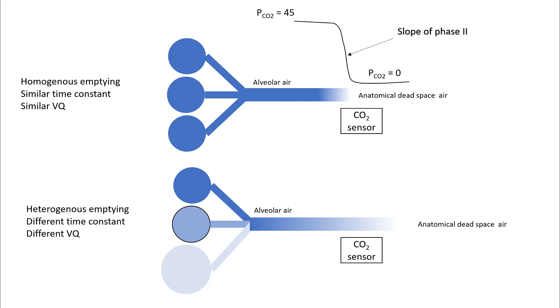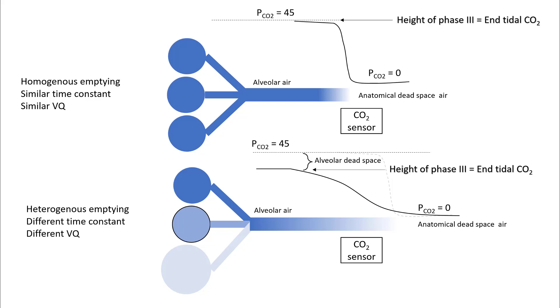So the transition between anatomical dead space air and alveolar air is more gradual. The slope of phase two is much lower than seen in normal conditions. Whenever you see the slope of phase two be more slopey, you are looking at alveoli with different time constants. This is mostly seen in patients with obstructive lung disease.